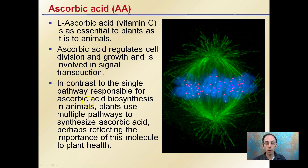In contrast to the single pathway responsible for ascorbic acid synthesis in animals, plants use multiple pathways to synthesize this particular plant hormone. This perhaps reflects the importance of this molecule to plant health — because it has multiple pathways, in case something were to happen to one, plants can still produce ascorbic acid through the others.